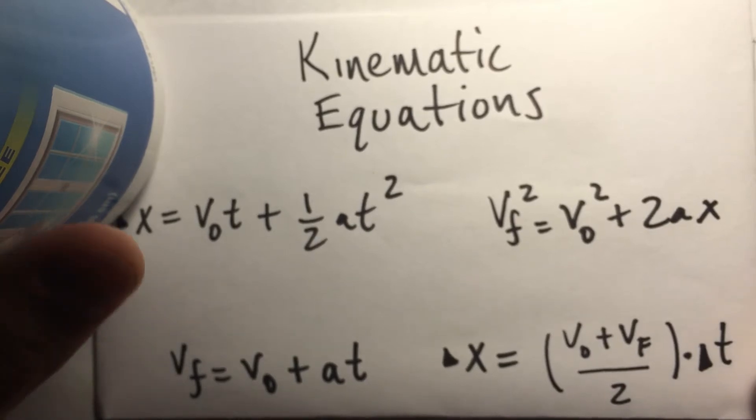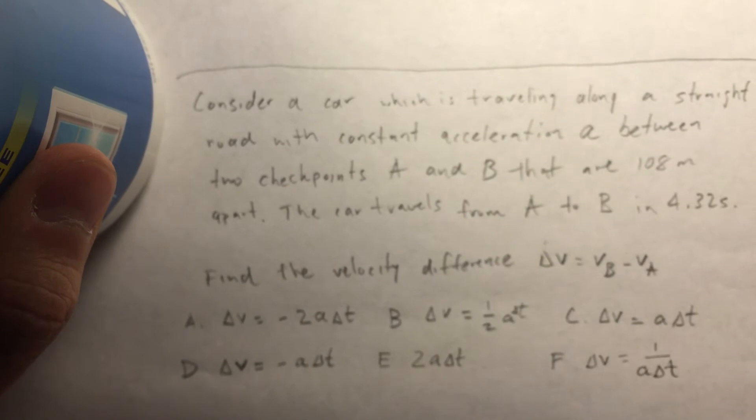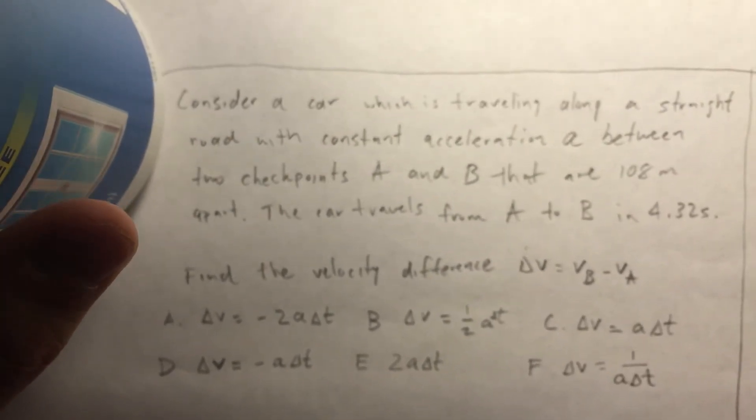Now, to our first problem. It says, consider a car which is traveling along a straight road with constant acceleration between two checkpoints A and B that are 108 meters apart. The car travels from A to B in 4.32 seconds.